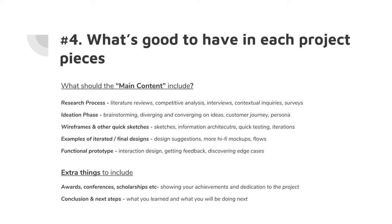For the main content, since it's a UX portfolio, don't just put visual things — include text explaining your thought process. It's not just about putting wireframes; you need to explain why you made decisions and what you learned afterward, including whether you did testing. The research process can include literature reviews, competitive analysis, interviews, and surveys. The ideation phase can include affinity diagrams, brainstorming, customer journeys, and personas. Also include wireframes, quick sketches, and examples of iterated or final UI designs and functional prototypes.